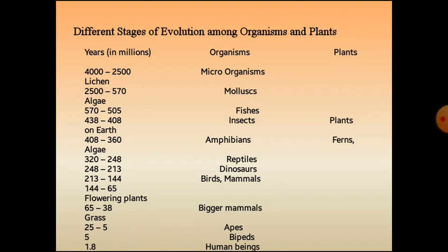From 4000 to 2500 million years, microorganisms were present, and plants like lichens were there. From 2500 to 570 million years, molluscs were the organisms and algae were the plants. From 570 to 505 million years, fishes were there.